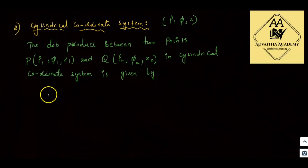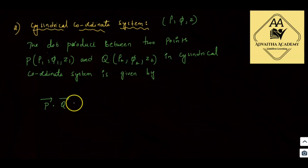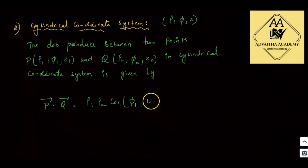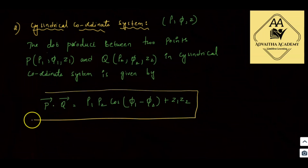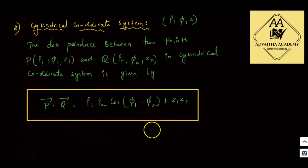P bar dot Q bar is equal to rho1·rho2·cos(phi1 minus phi2) plus z1·z2. This is the formula for the dot product in the cylindrical coordinate system.